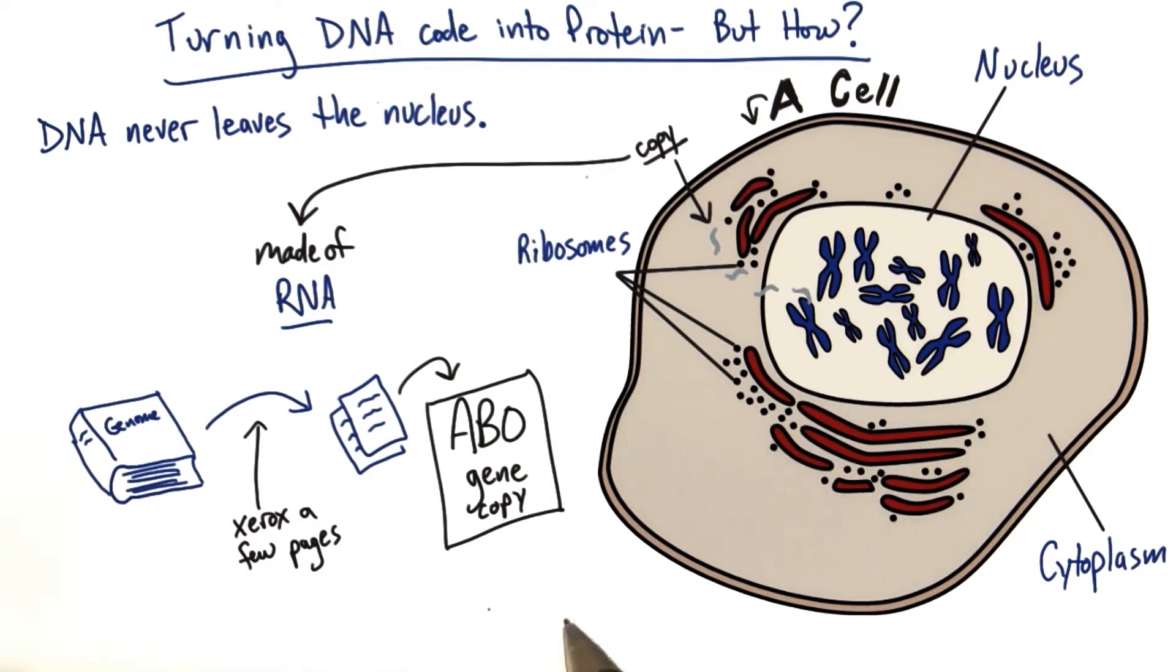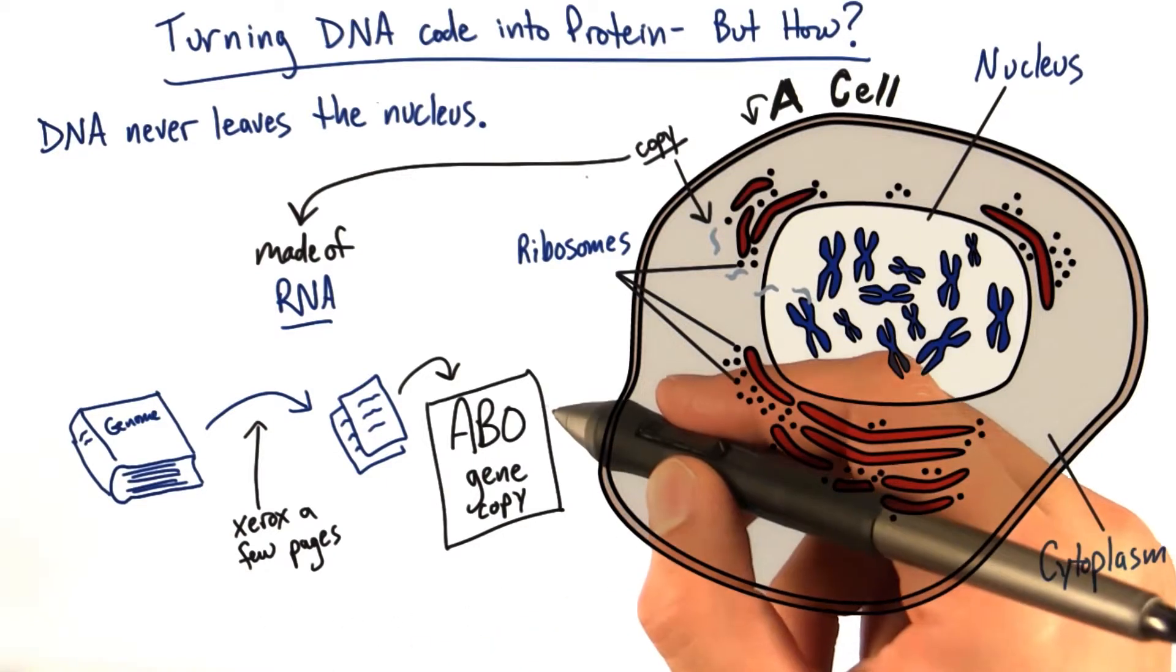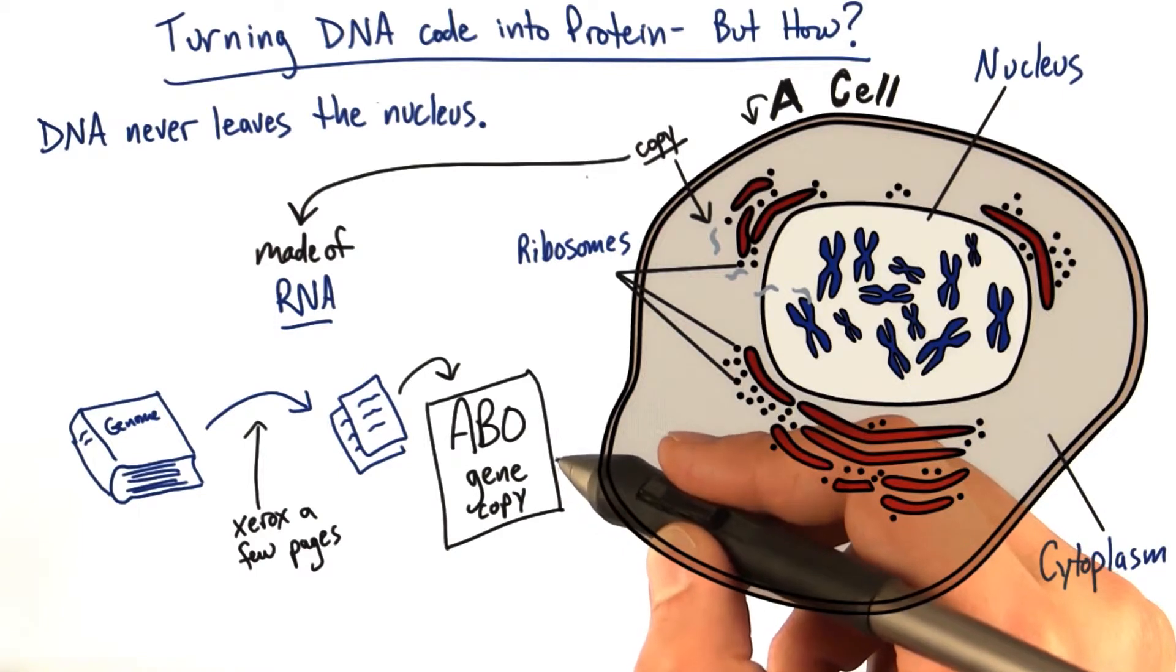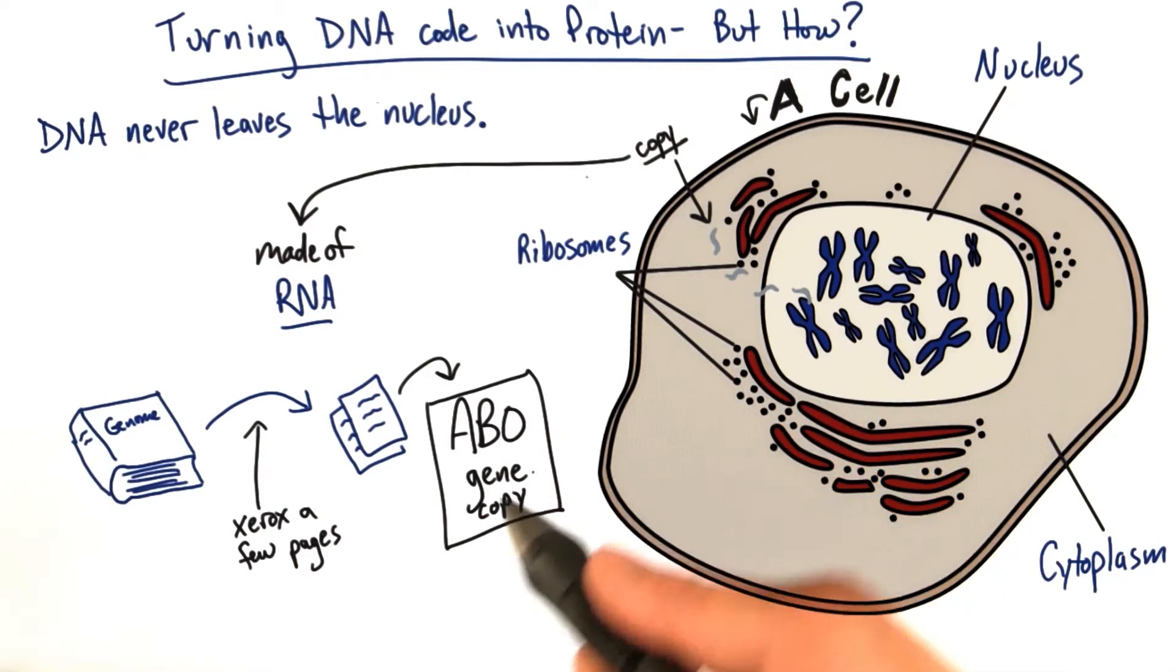This copying process must happen for every protein coding gene. Any gene that's going to produce a protein, including the ABO gene. So for the ABO gene to be turned into protein, we'll first make a copy that'll be brought to the cytoplasm and then turned into protein.